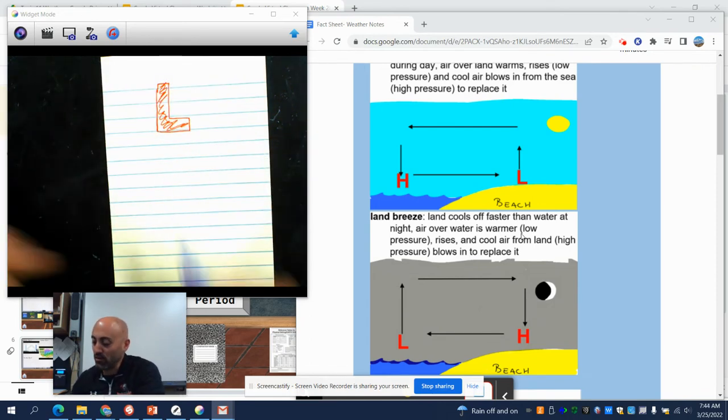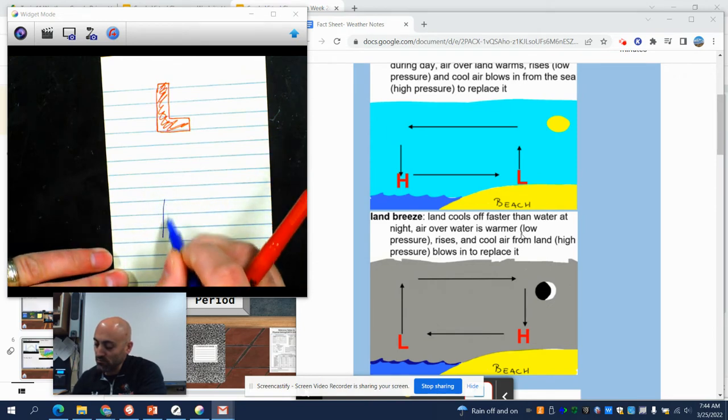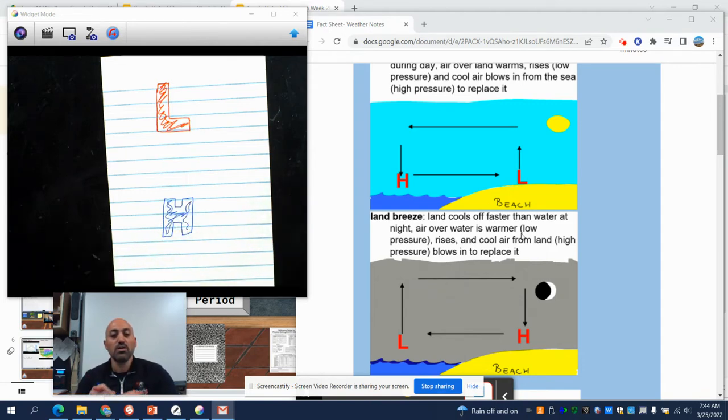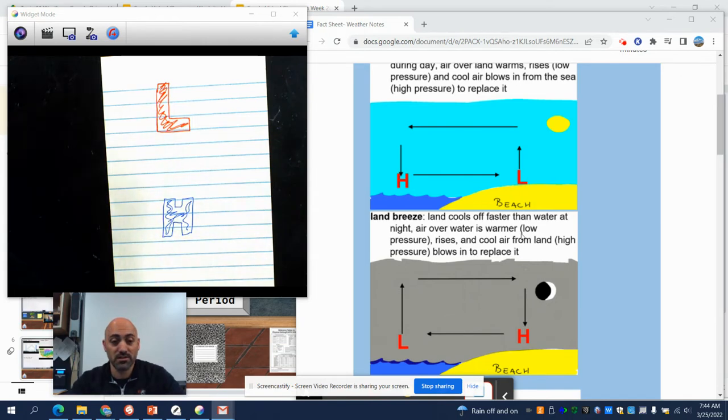High pressure is drawn with blue because it's cold air. Cold air sinks, hot air rises. So we've got two types of pressure. You have to memorize this next part.